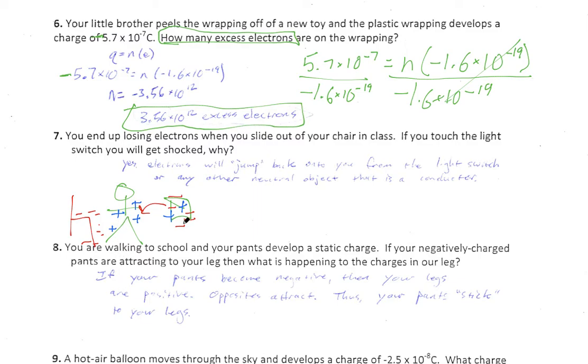And that's for every object that has a deficiency of electrons, it's going to gain electrons. If it has too many electrons, an excess of electrons, then those electrons are going to jump the other way. But in this case, you're positive after being charged up. So you need negatives. So it's actually the light switch to you that gets the little zap rather than you to the light switch. If you had collected negatives, then it would be the opposite. You're walking to school, your pants develop a static charge. If your negatively charged pants are attracting to your leg, what's happening to the charges in our leg?